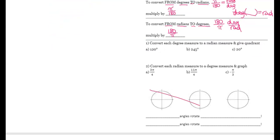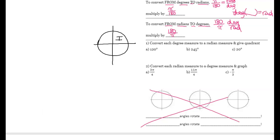The last thing we have is to convert degree measures to radian measures and give the quadrant. Remember there are four quadrants. You start here and rotate counterclockwise — that's why the quadrants are organized as they are: quadrant one, two, three, four. Going from 0 degrees to 90 to 180 to 270 degrees in degrees, and from 0 to π/2 to π to 3π/2, and then to 2π, which is back at zero.